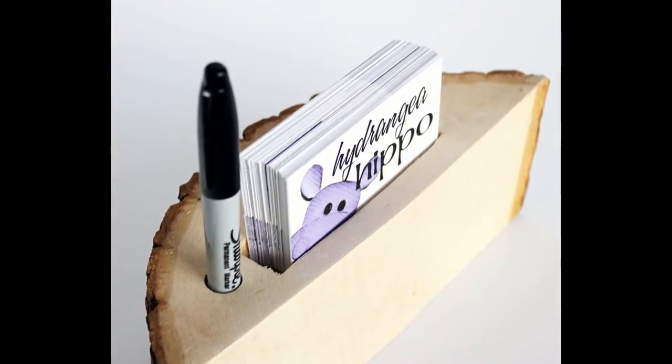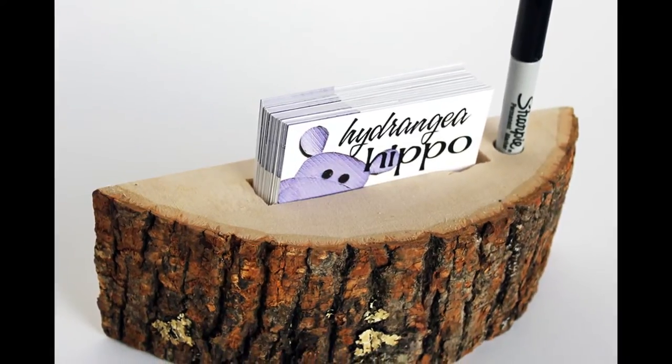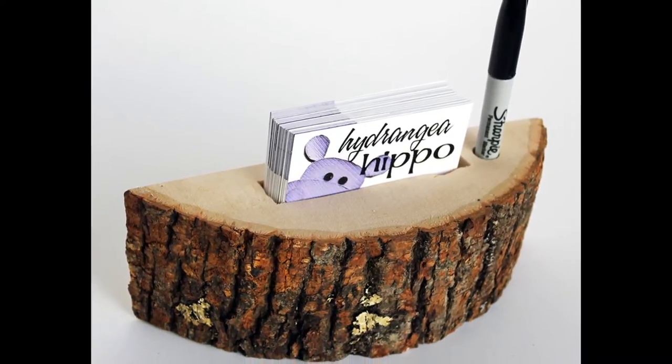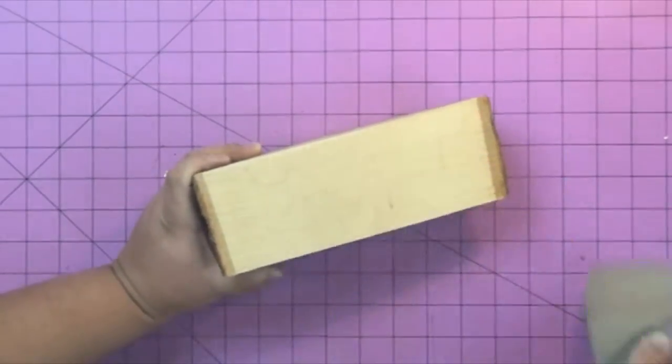Here you can see I have my business cards and a pen in this really cool rustic wood slab project. And this is from Walnut Hollow, so you can get these. They're super affordable, I couldn't believe how affordable they were.